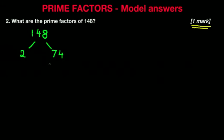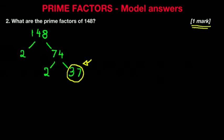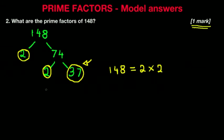Now 74 is also an even number, so we can divide this by 2. 74 divided by 2 — I'm sure you can do this in your head — the answer is 37. Now have a look at the number 37. 37 is not divisible by any other number apart from itself and 1. 37 is in fact a prime number, as are the 2s we used. Therefore the prime factors of 148 are 2 times 2 times 37.